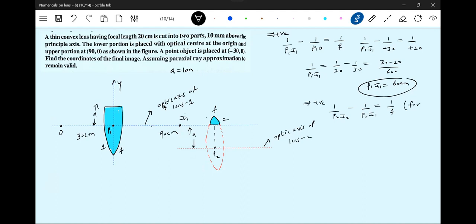This is P2 I2. 1 by P2 I2 minus 1 by P2 I1 equal to 1 by f. P2 I1 will be minus 30. Focal length is plus 20. Why minus 30? This distance should be equal to... So this will be P2 I2 equal to 1 by 20 plus 1 by 30, so P2 I2 equal to again, again will be plus 60.